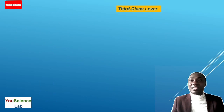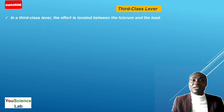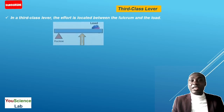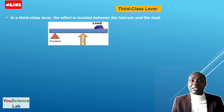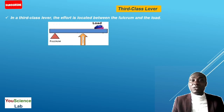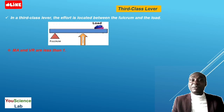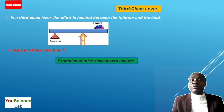Finally, the third class lever. In a third class lever, the effort is located between the fulcrum and the load. The mechanical advantage and velocity ratio are always less than 1.